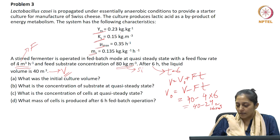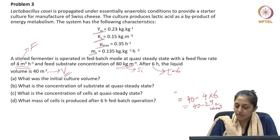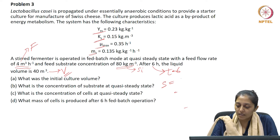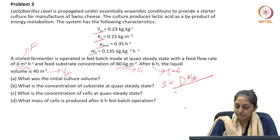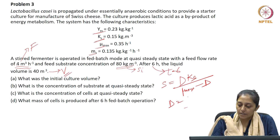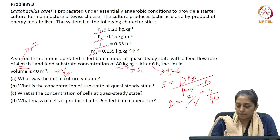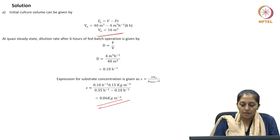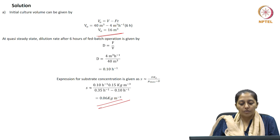What is the concentration of substrate at quasi steady state? We need to determine the substrate concentration using the expression in terms of dilution rate D equals F divided by V. With the final volume of 40 and flow rate of 4, D equals 0.1 per hour after 6 hours. Knowing Ks and mu max, the residual steady state substrate concentration comes out to be 0.06 kg per metre cube.